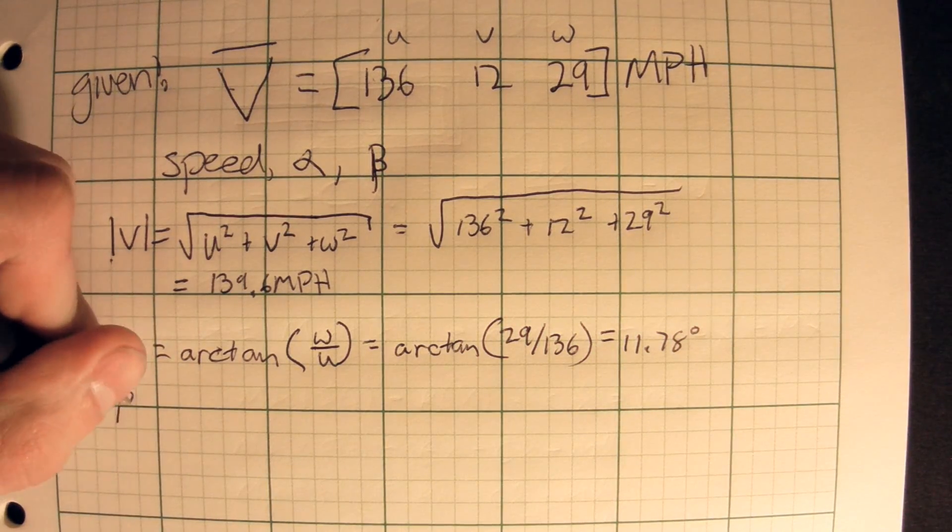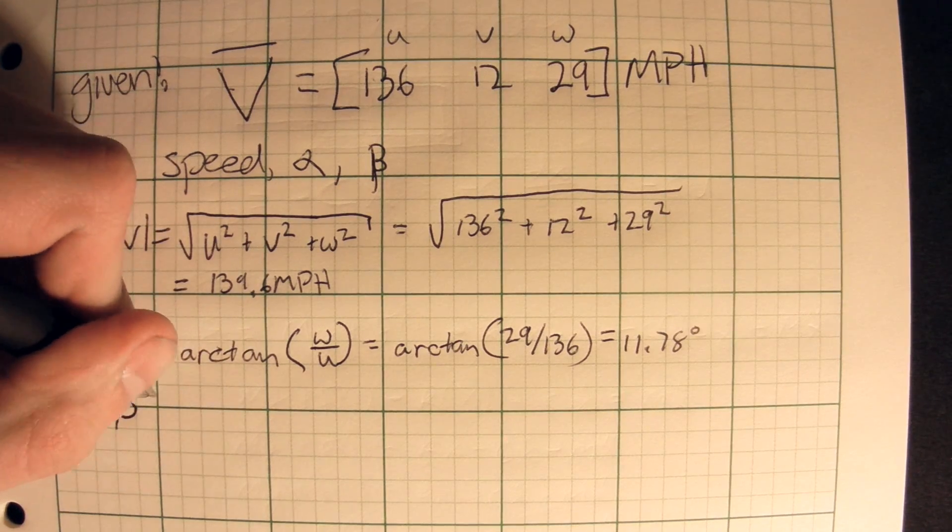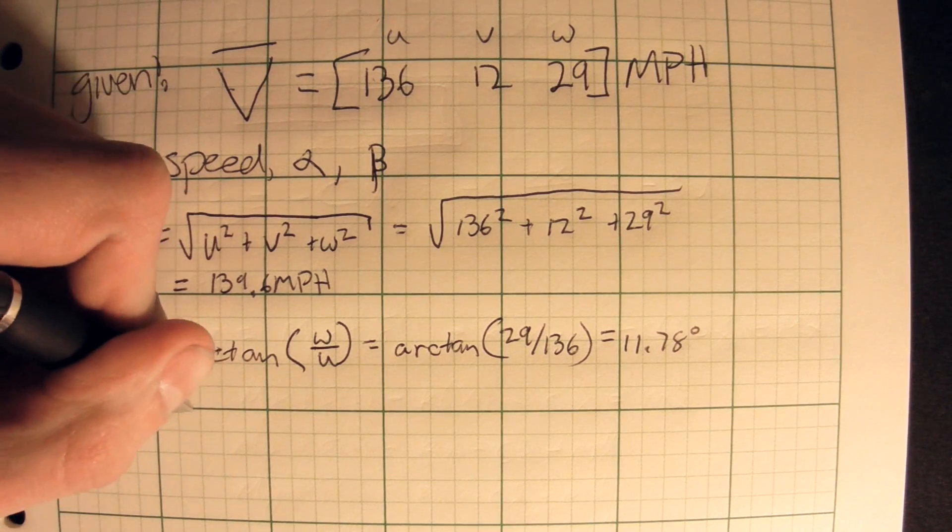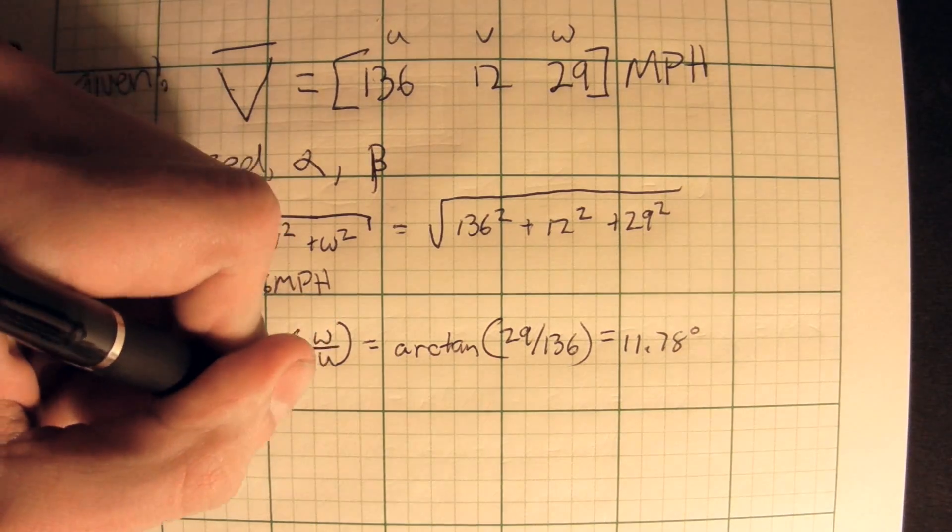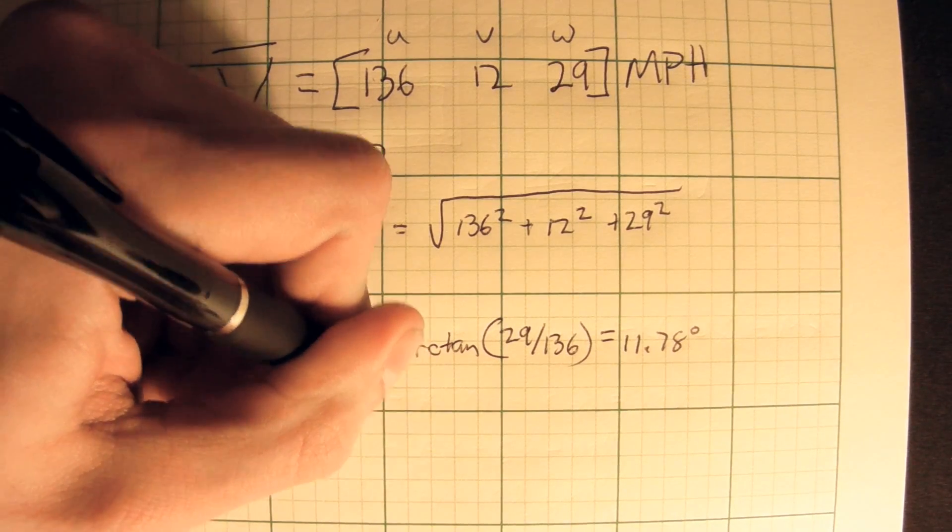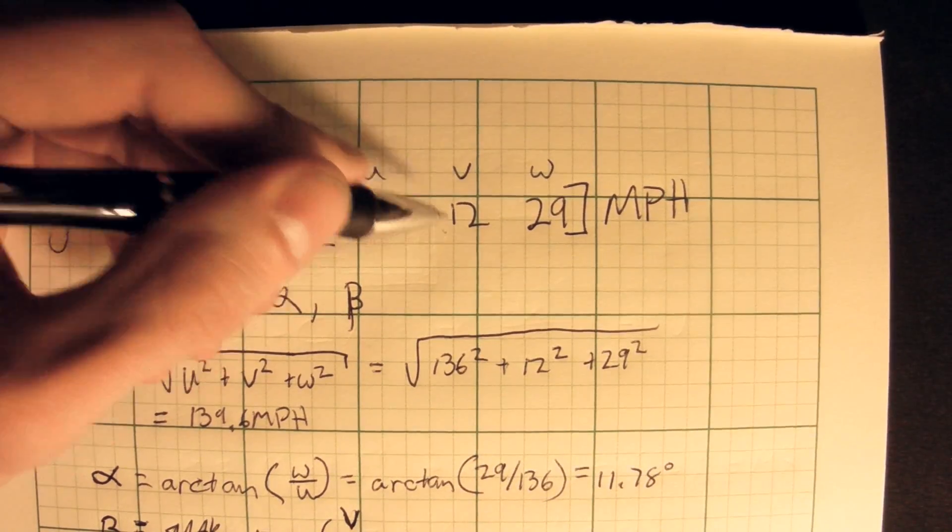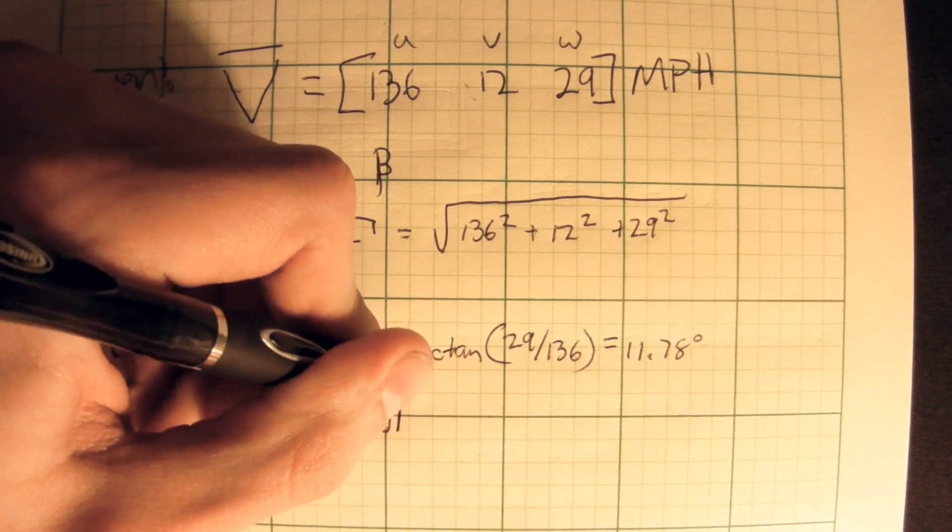Next, we have side slip. That, as you recall, is equal to arc sine of the v, which is this v right here, not to confuse it with this other one, over the magnitude of the velocity vector.